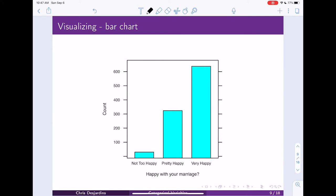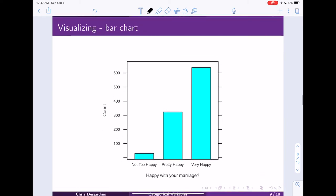In addition to looking at categorical data via a table, we can also visualize it in something called a bar chart.